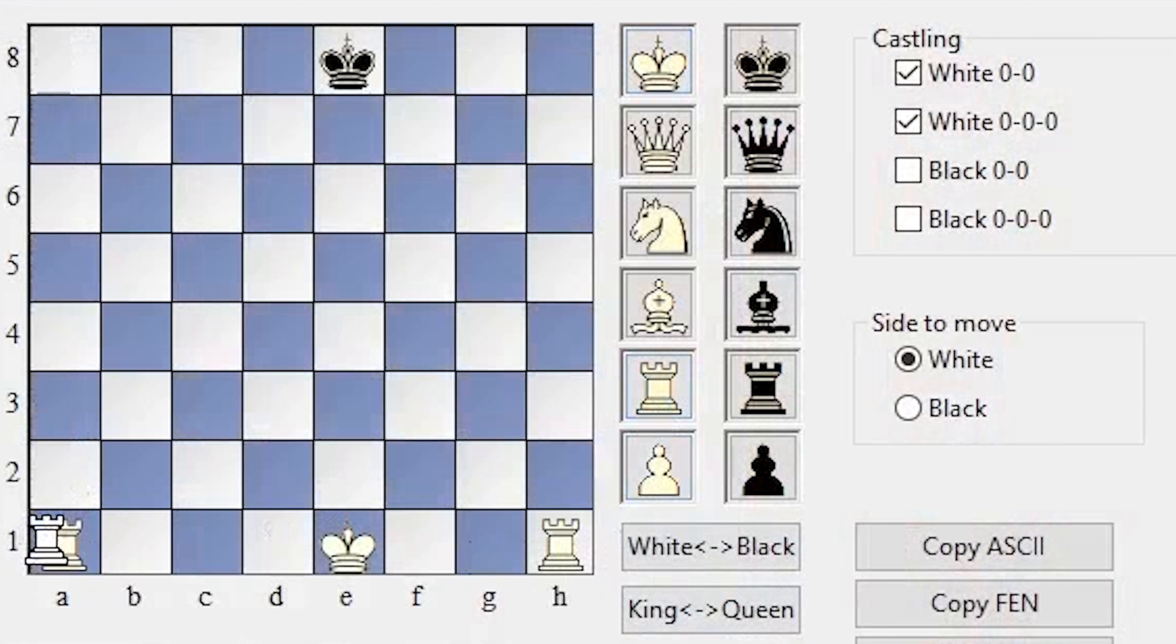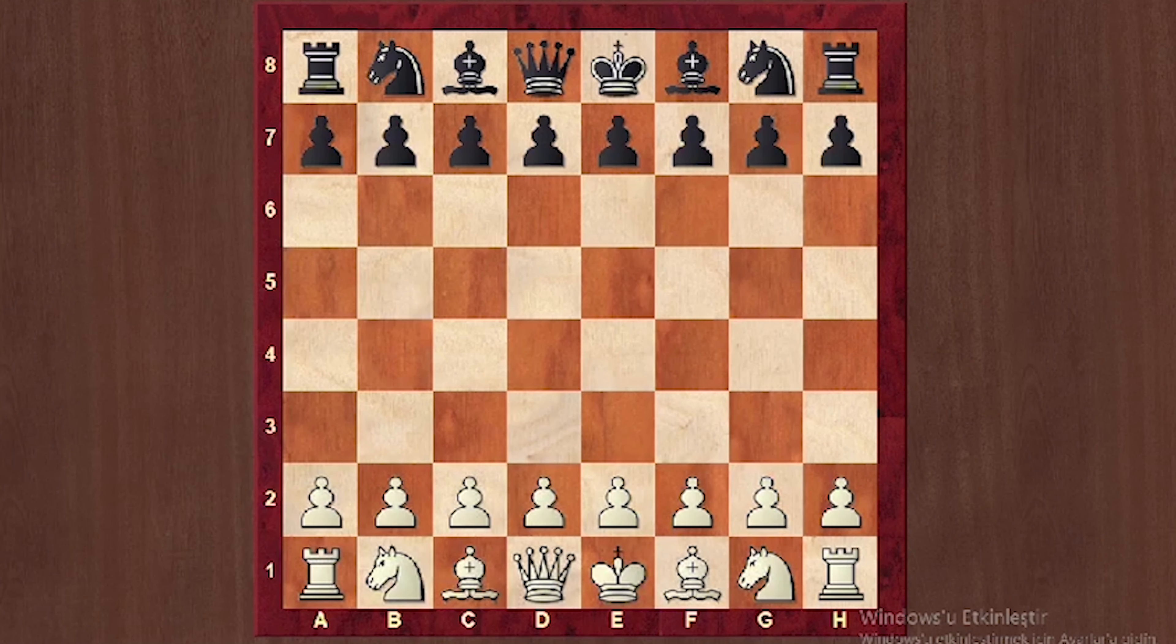Then we talked about bishops. Yes, we determined the bishops in this way: one of the bishop starts in the dark square and the other in the light square. We said that he continues the game in those squares throughout his life. Thank you for watching my video, friends. Let's not forget to like and subscribe. See you in my next video.